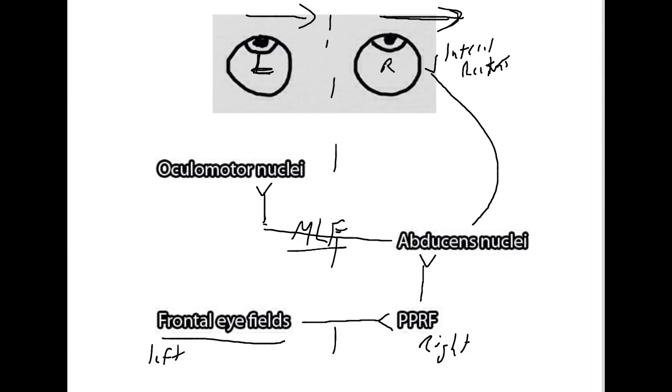Once that information makes it to the oculomotor nuclei, this nerve, via the third cranial nerve of the oculomotor nerve, is going to make a connection to the medial rectus muscle. And that is going to allow the left eye to adduct, which means look towards the right or look towards the nose.